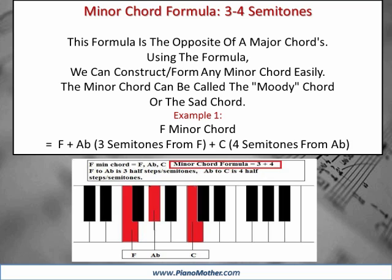Minor Chord Formula: three to four semitones. This formula is the opposite of a major chord's. Using the formula, we can construct or form any minor chord easily. The minor chord can be called the moody chord or the sad chord. F minor chord equals F plus Ab, three semitones from F, plus C, four semitones from Ab.